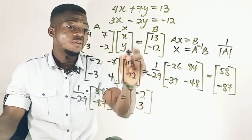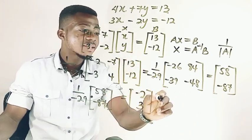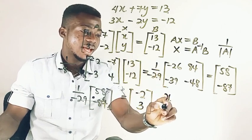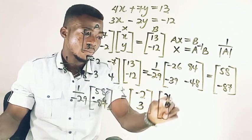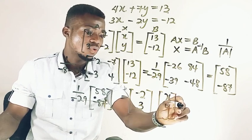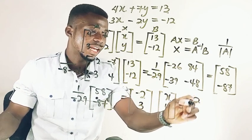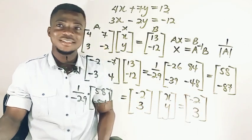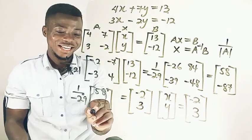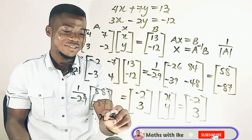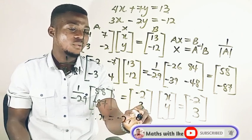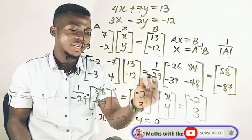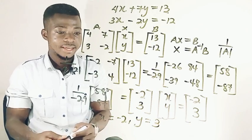So therefore, our X, which is x and y, is equal to negative 2 and 3. That's it. Therefore, x is equal to negative 2 and y is equal to 3. That is the answer.